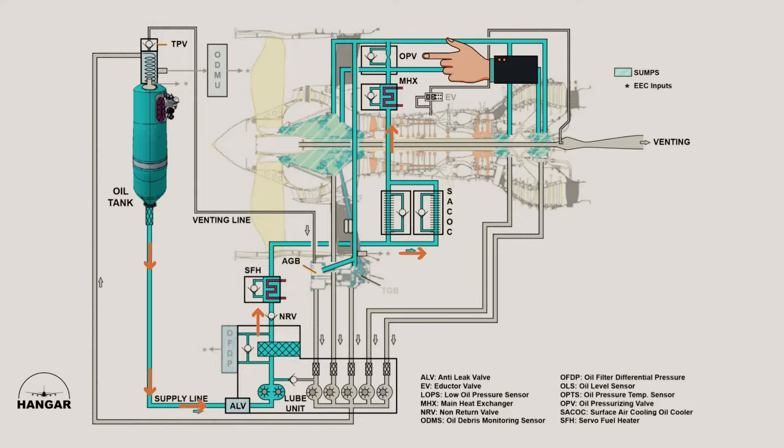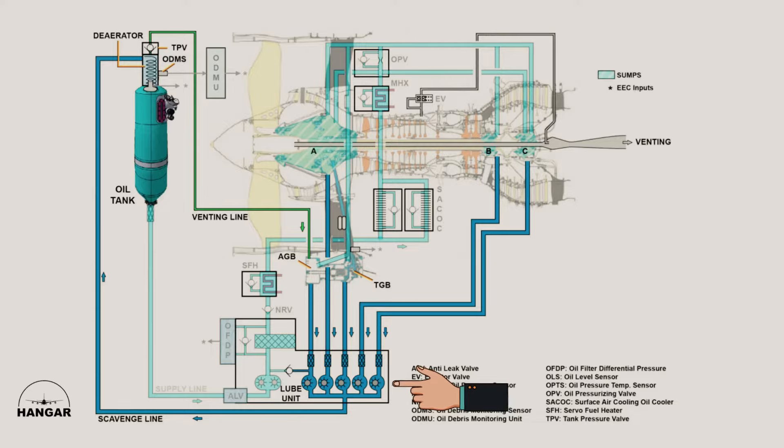The oil pressurizing valve, OPV, at the oil outlet of the main heat exchanger enables pressurized oil to feed the engine oil dampers. The lubrication unit has five scavenge pumps that are used to pull scavenge oil from the sumps A, B, C, and the gearboxes, TGB and AGB.